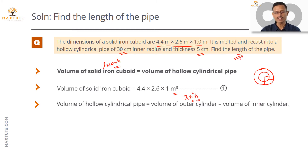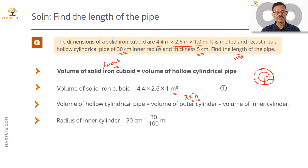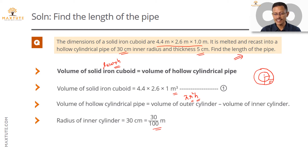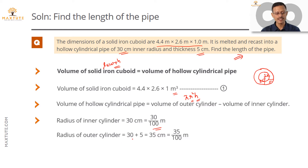The height is what we are trying to find — that's the length of the pipe. We have the inner radius, which is 30 centimeters, or 30/100 meters. The thickness of the pipe is 5 cm, so the outer radius is 30 + 5 = 35 centimeters, which in meters is 35/100. We now have both radii expressed in meters.